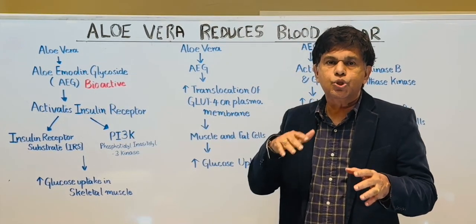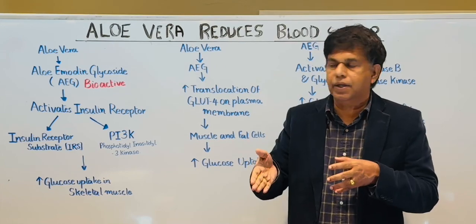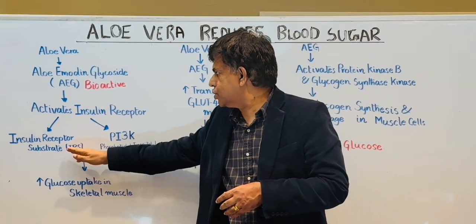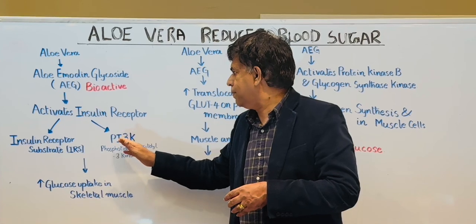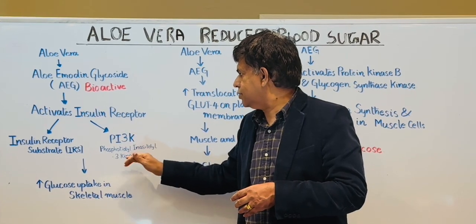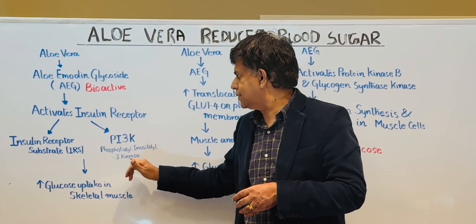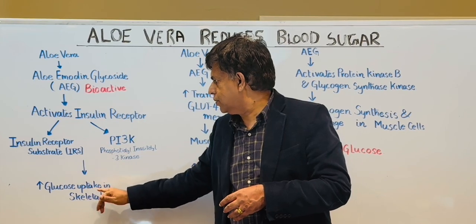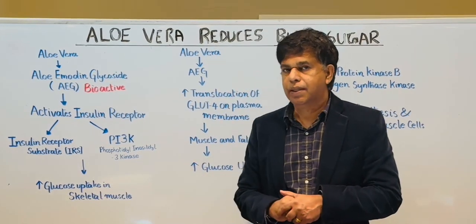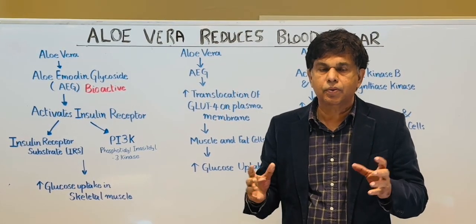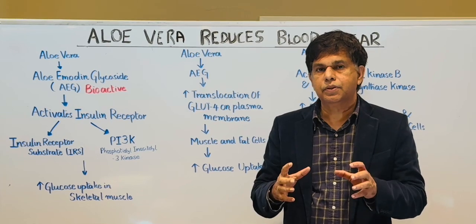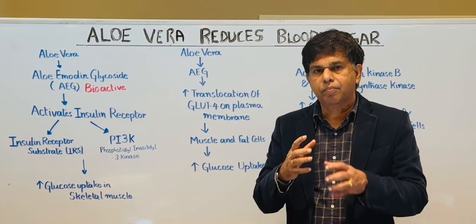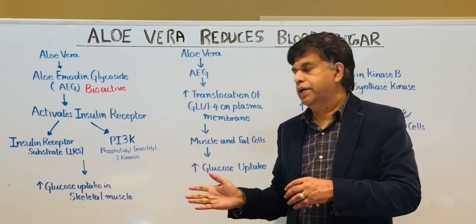Remember, you need insulin to get blood glucose into the cell. AEG activates the insulin receptor substrate and PI3K — phosphatidylinositol 3-kinase — resulting in glucose uptake in the skeletal muscle. Most of this insulin signaling gets activated, and then blood glucose enters into the cell.